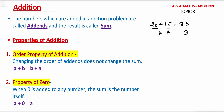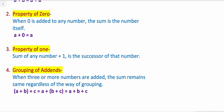Now let's see the properties of addition. Property 1: Order property of addition. Changing the order of the addends does not change the sum. That is, 54 plus 31 is the same as 31 plus 54. So 54 plus 31 is 85, and 31 plus 54 is also 85.